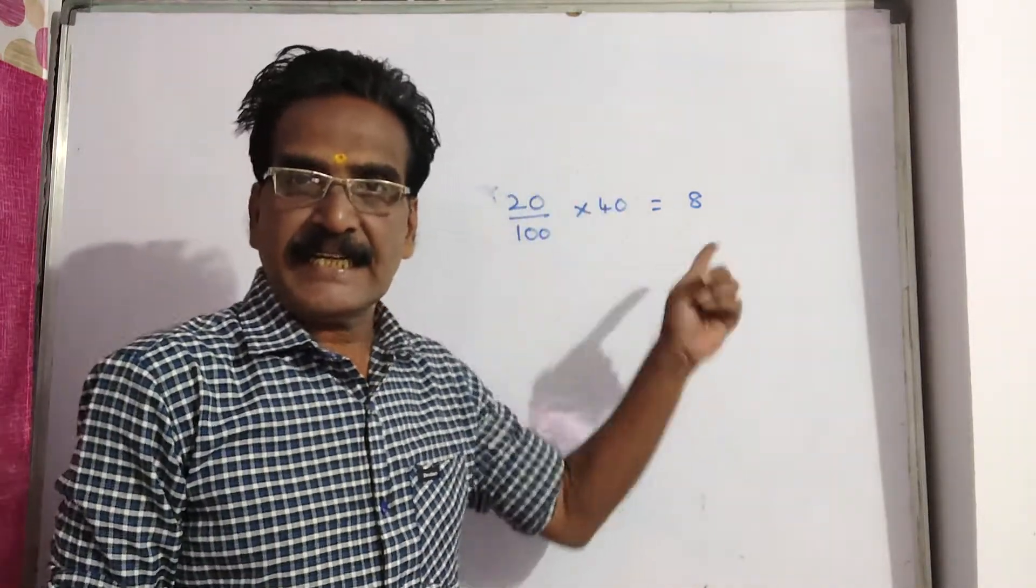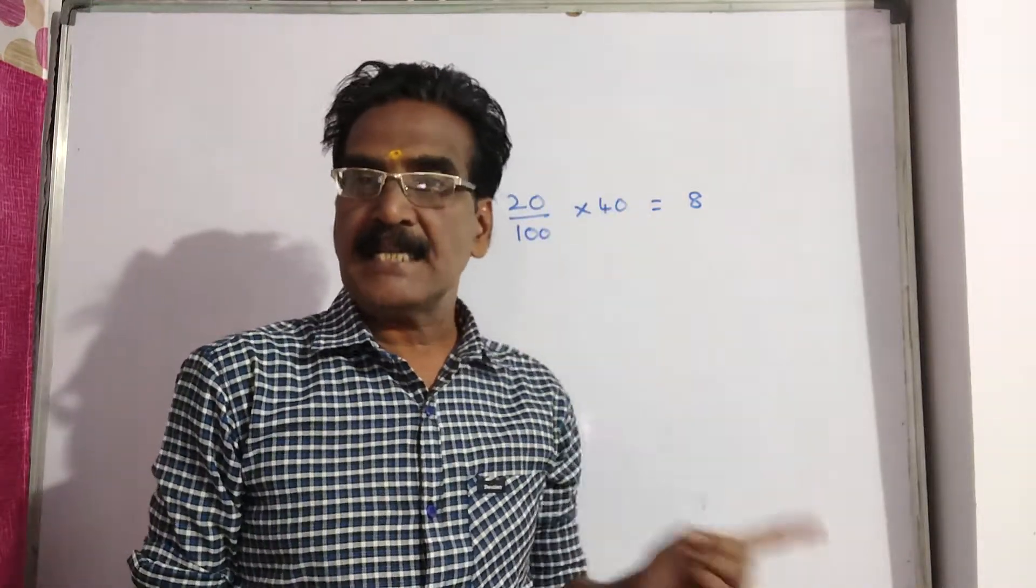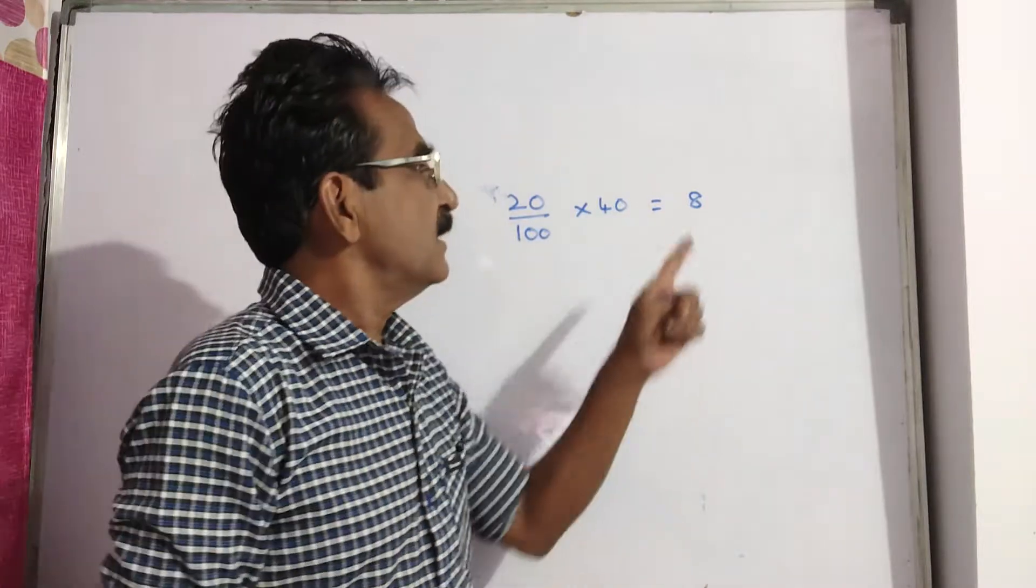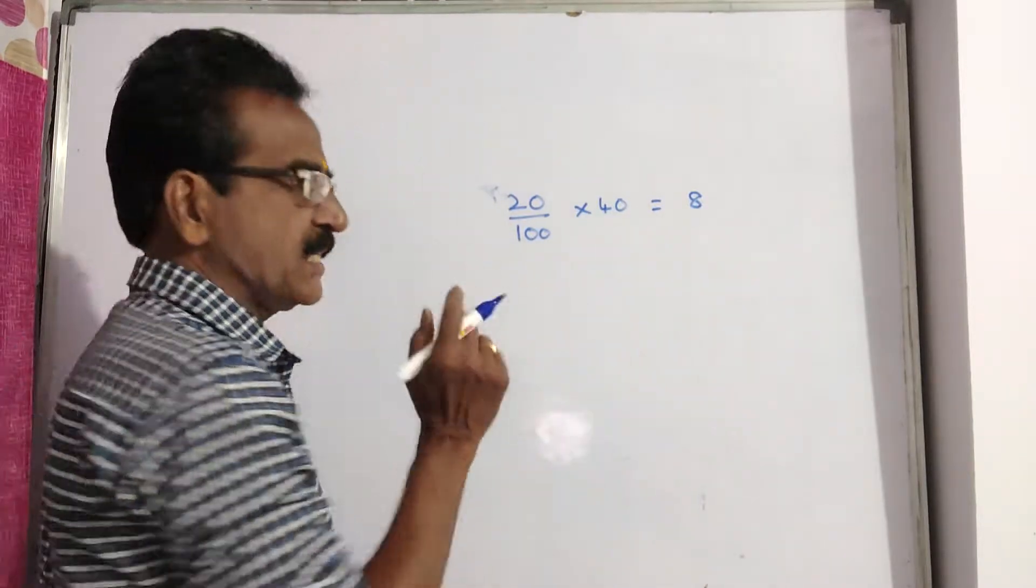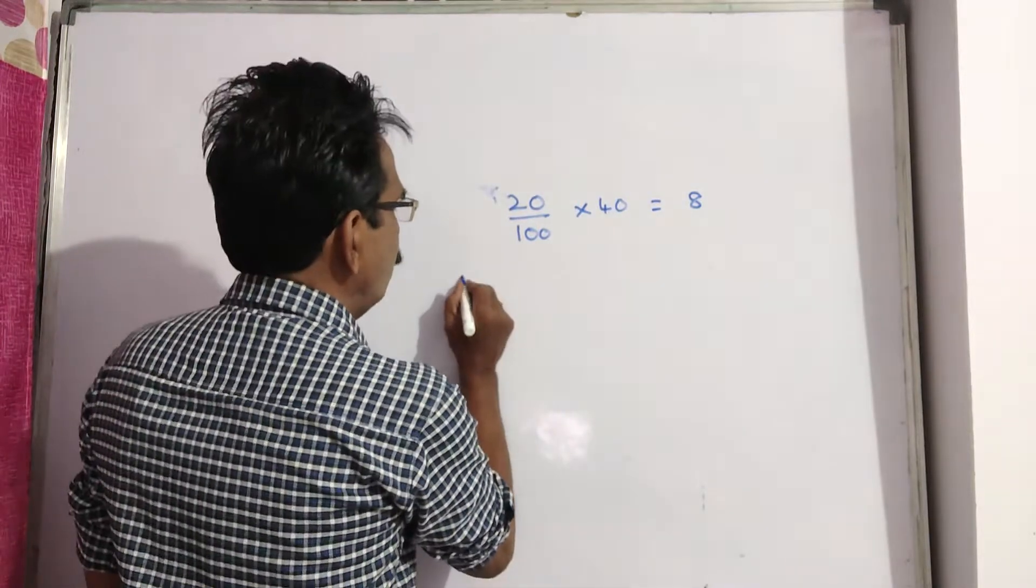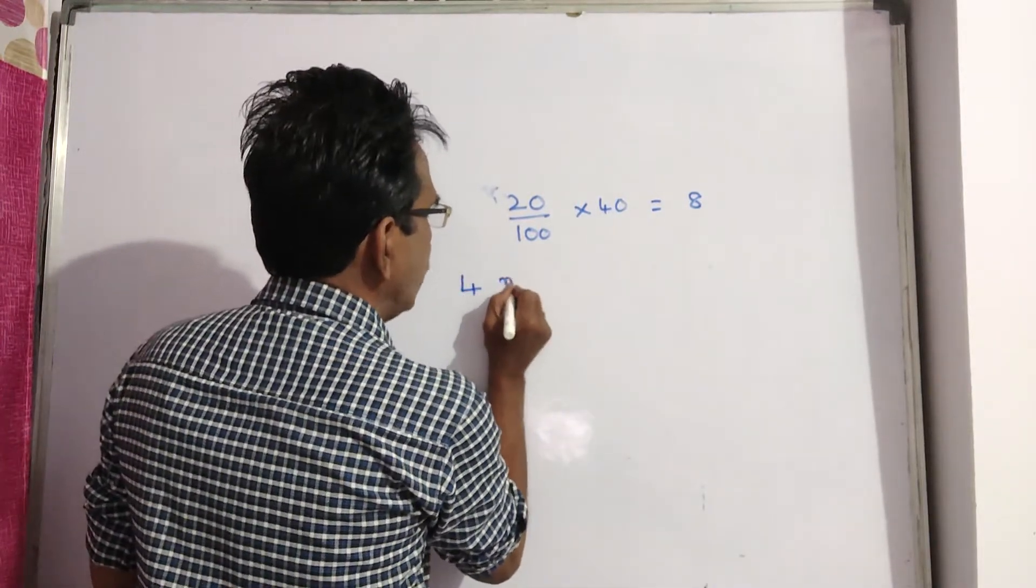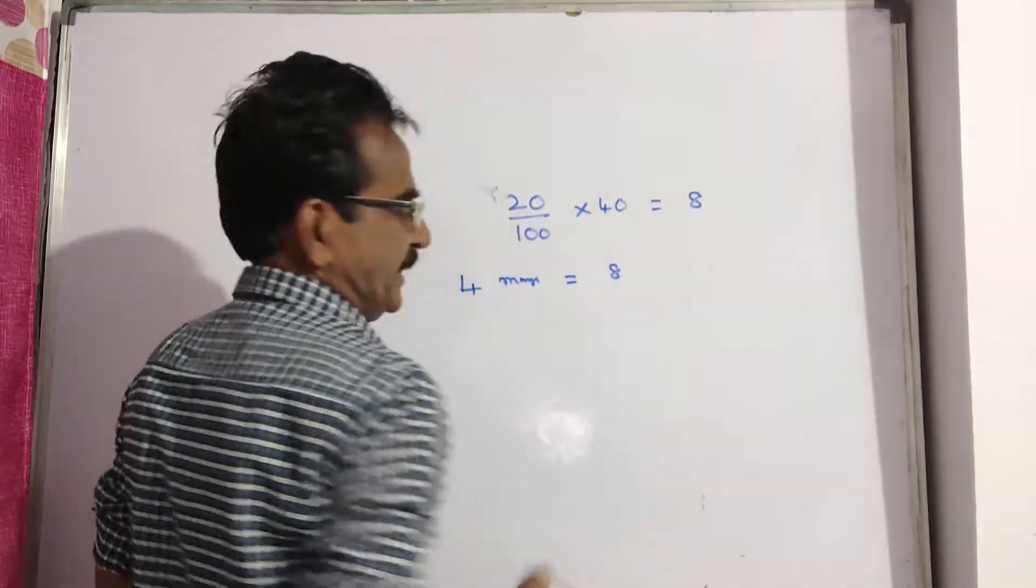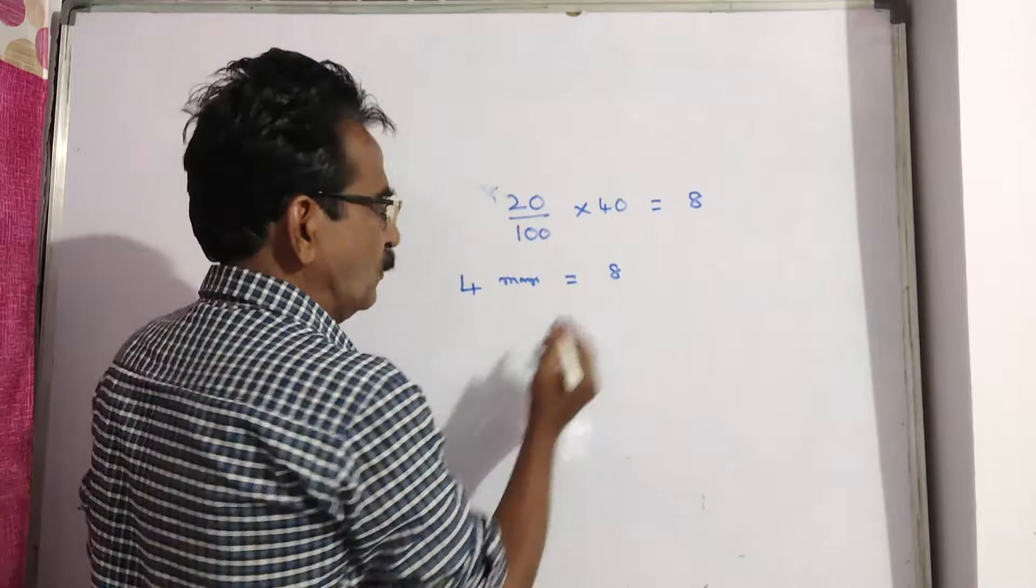Because of this 8 rupees increase, a person gets 4 mangoes less. So that means this 8 rupees is the price of 4 mangoes after increase. 4 mangoes equals 8 rupees.